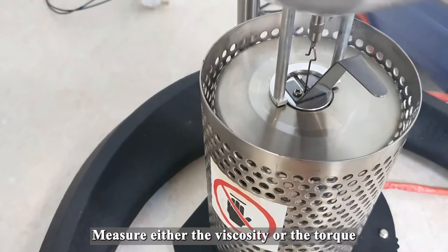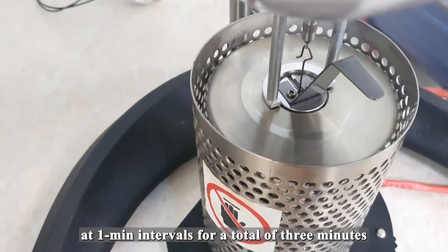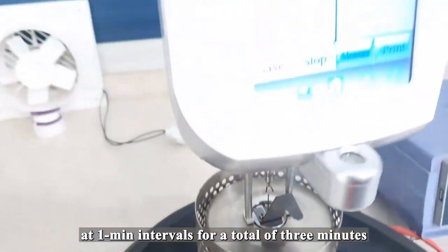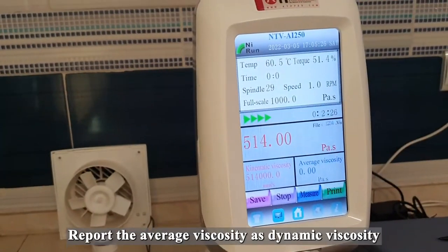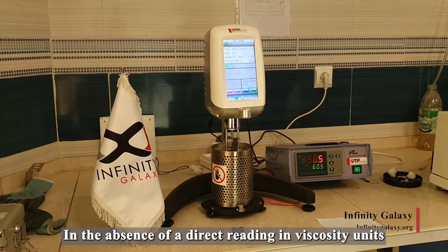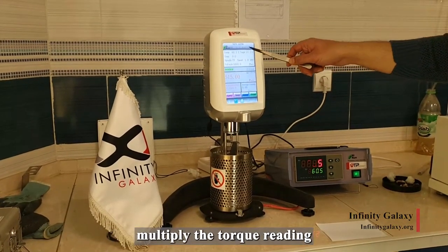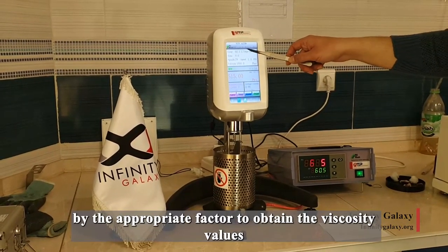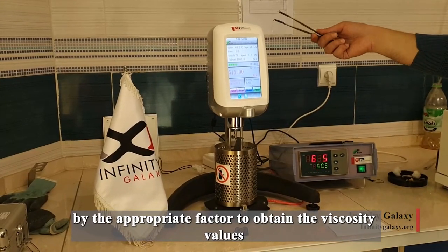Measure either the viscosity or the torque at 1 minute intervals for a total of 3 minutes. Report the average viscosity. In the absence of a direct reading in viscosity units, multiply the torque reading by the appropriate factor to obtain the viscosity values.